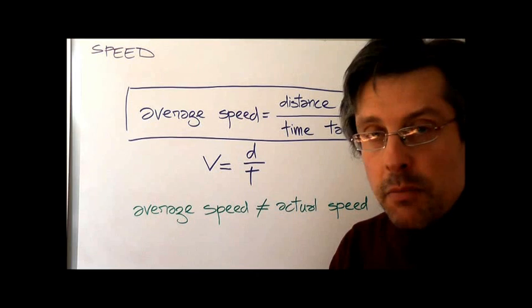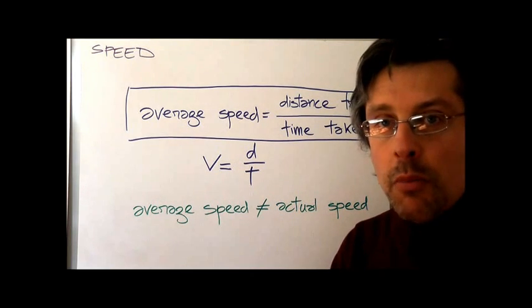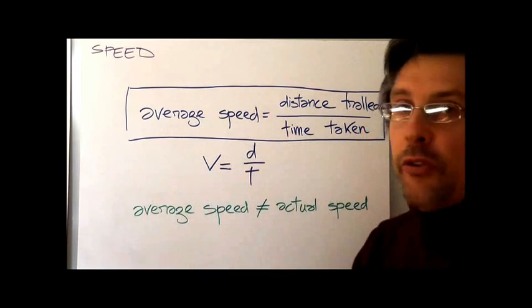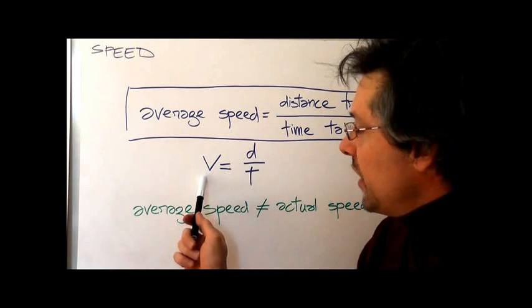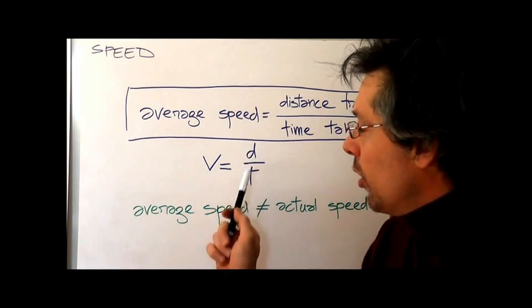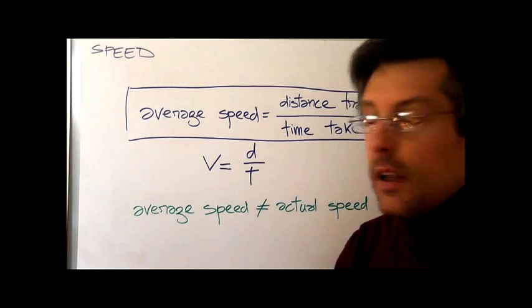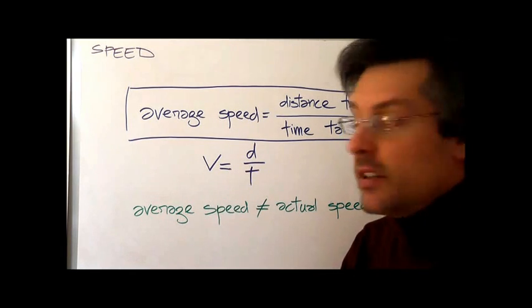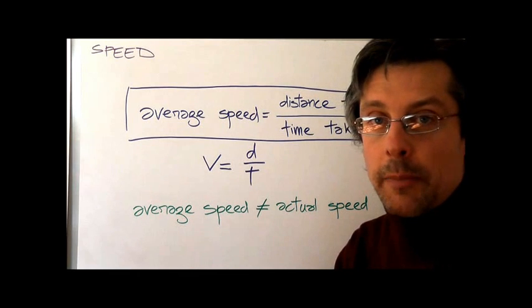But a symbol equation will give you more information. In this case, we will rewrite the same formula as V equals D over T. V stands for speed, D stands for distance, and T stands for time.